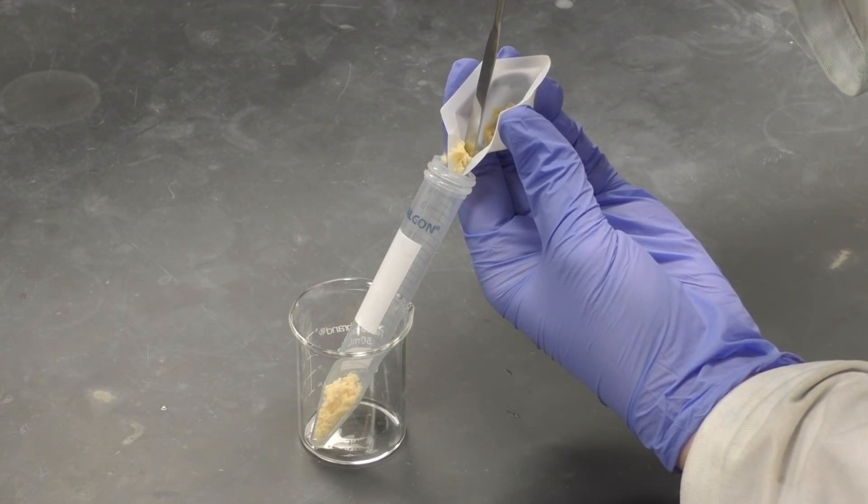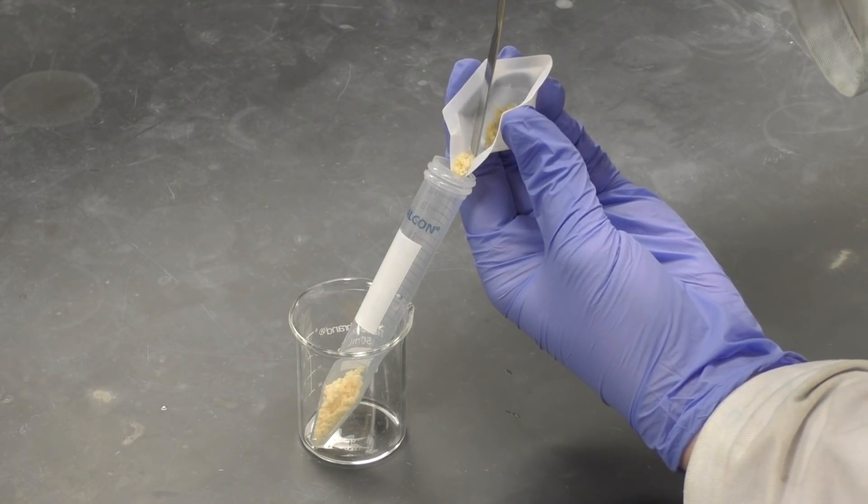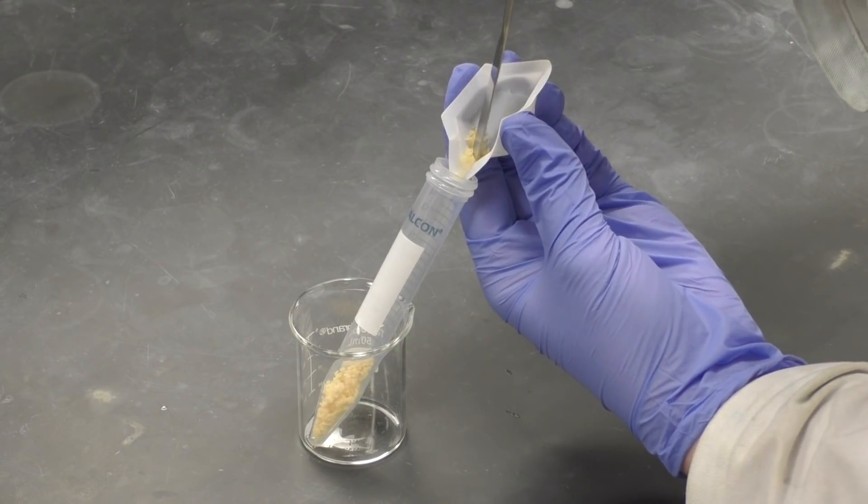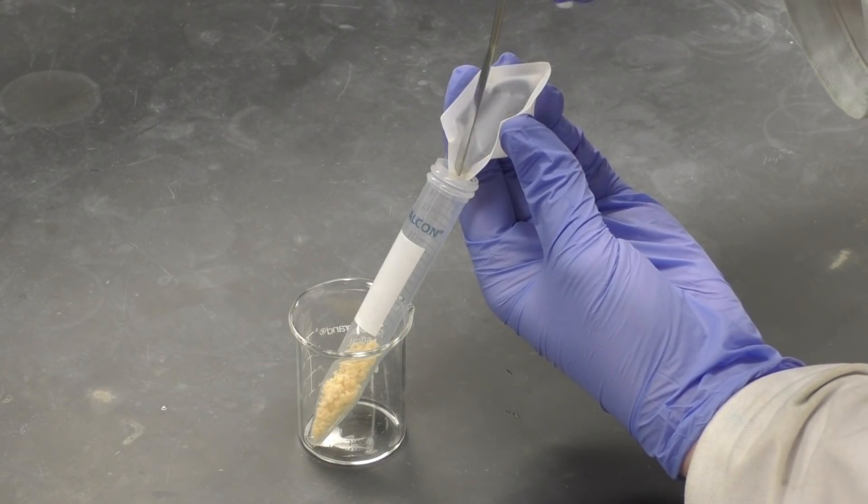Now, transfer the food sample from the weighboat to a 15 milliliter centrifuge tube. Try to get as much of your sample into the tube as possible. Using a spatula might make this easier.